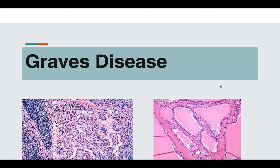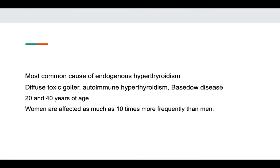We will discuss Graves' disease. I have a Hashimoto's thyroiditis video already on my channel. Graves' disease is the most common cause of endogenous hyperthyroidism. It also goes by the names diffuse toxic goiter and autoimmune hyperthyroidism, as the pathogenesis is autoimmune in nature.